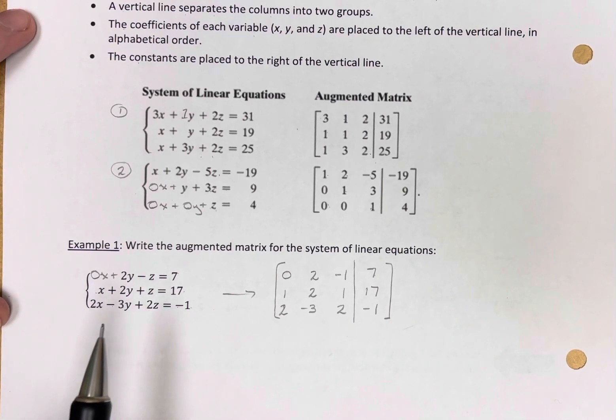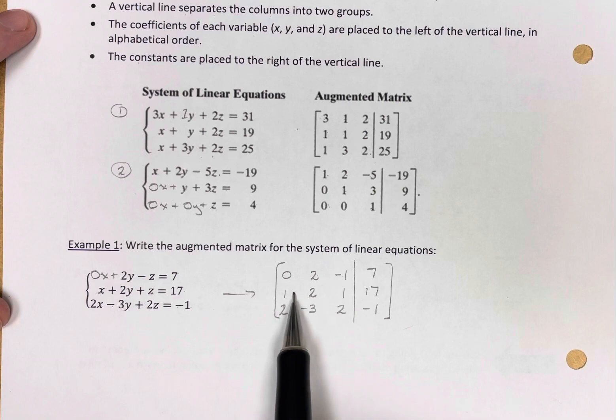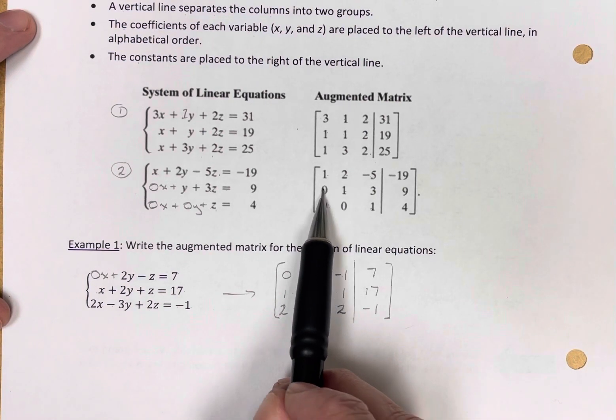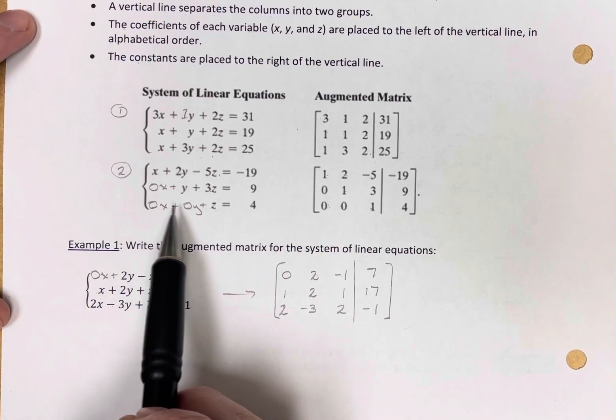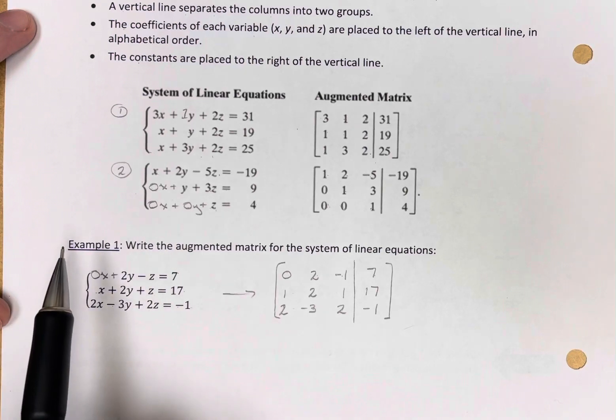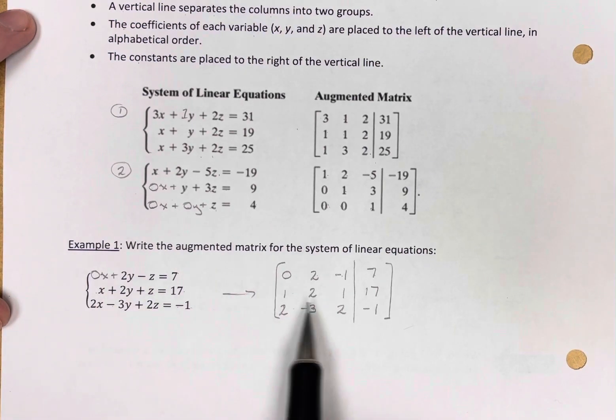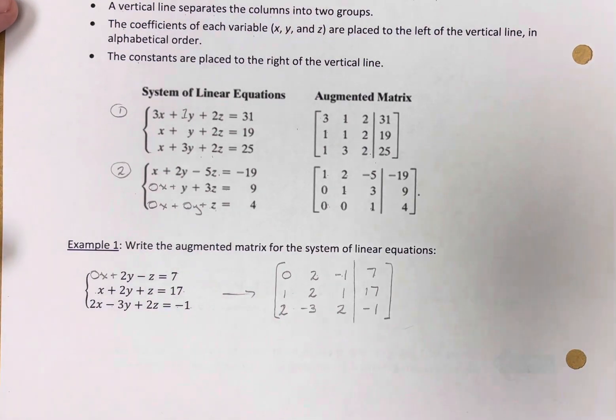What's important in an augmented matrix is you don't want to have any spaces that are blank. You're going to need to add in zeros if you're missing those variables in the system of linear equations. Otherwise, it's fairly straightforward.